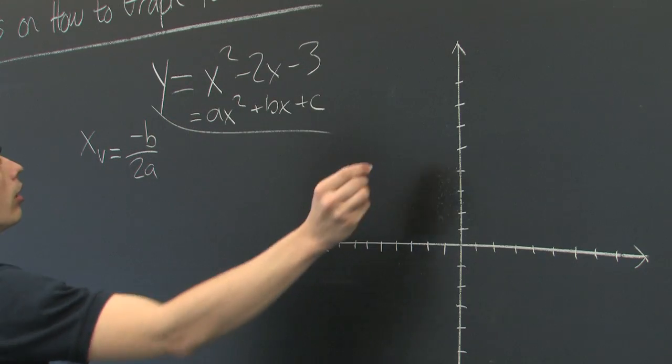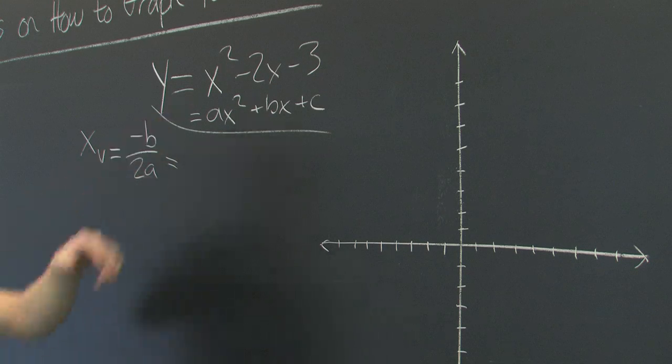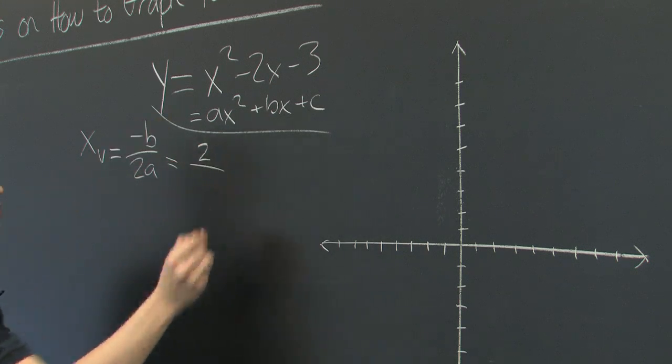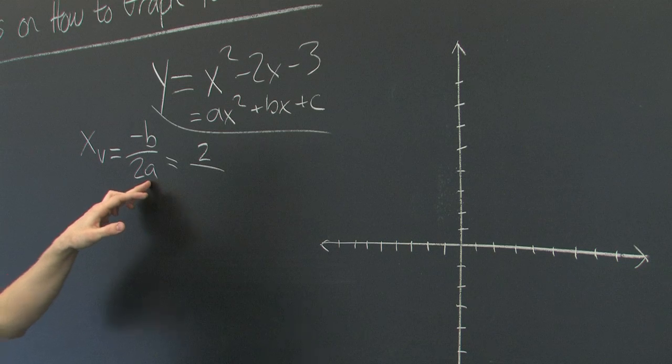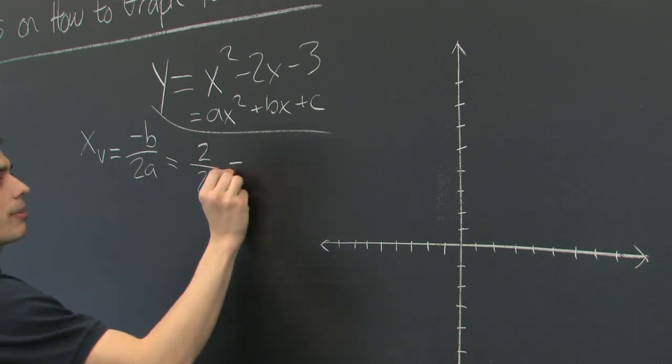So using this formula, our b is negative 2. So negative negative 2 becomes positive 2. Our a is 1. The 2 times 1 is 2, and this just simplifies to 1.